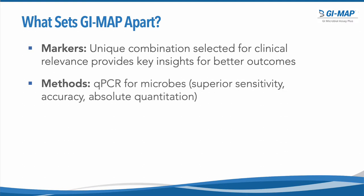Next, we have the unique methodology that is employed for the GI Map test. This methodology features quantitative PCR for detection and quantitation of the microbes, which provides superior sensitivity as well as accuracy, and also includes absolute quantitation so that we know exactly how much of a given microbe is present per gram of stool sample.